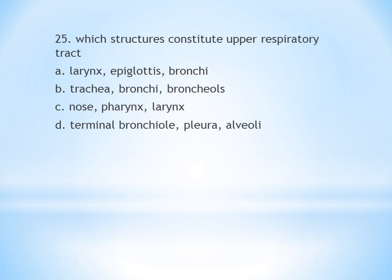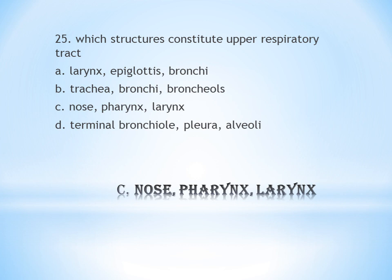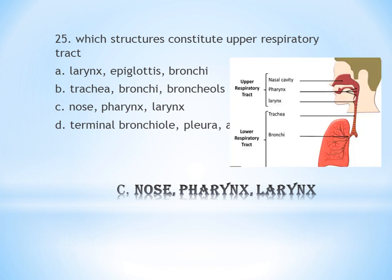Question 25: Which structures constitute the upper respiratory tract? A. Larynx, epiglottis, bronchi. B. Trachea, bronchi, alveoli, bronchioles. C. Nose, pharynx, larynx. D. Terminal bronchioles, pleura, alveoli. The upper respiratory tract includes the nose, pharynx, and larynx. The answer is C.